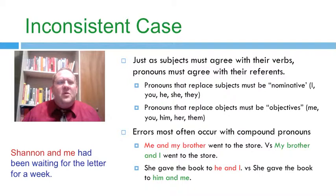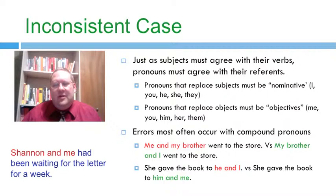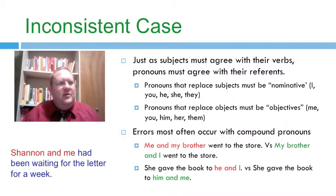But we usually make mistakes with compound pronouns. 'Me and my brother went to the store' instead of 'my brother and I went to the store.' Well, you would never say 'me went to the store,' but most people are more likely to say 'me and my brother went to the store' because the second noun takes away some of the closeness of the pronoun to the rest of the sentence. It just sounds less wrong — but it's just as incorrect.